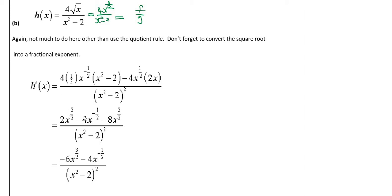Multiplying through: the first term gives 2x to the three-halves minus 4x to the negative half, and the second term gives negative 8x to the three-halves. Combine and simplify the numerator, and leave the bottom as a square — don't expand it. For our course, that level of simplification is sufficient.